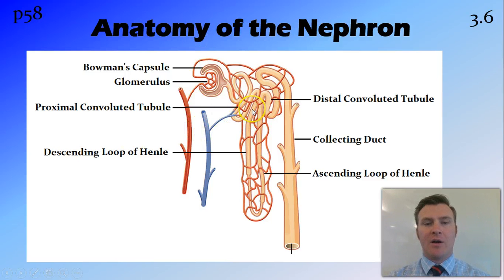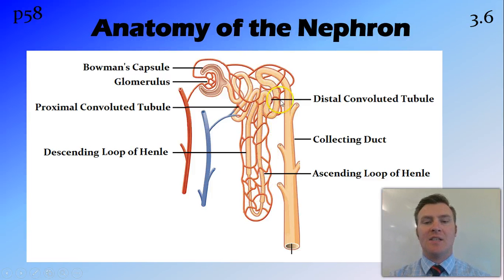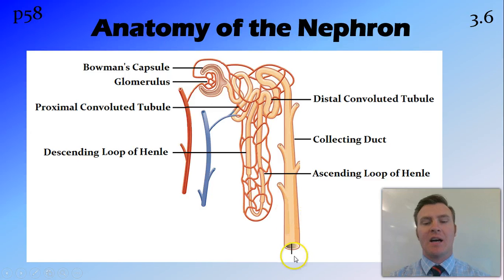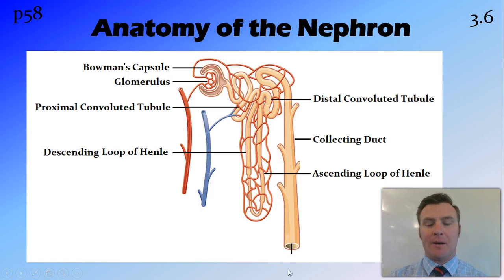The Bowman's capsule feeds into the proximal convoluted tubule — which just means the close, complicated tube. We then go into the descending loop of Henle, the ascending loop of Henle, and the distal convoluted tubule, or the far convoluted tubule. And then into the collecting duct, which goes down to the renal pelvis of the kidney.